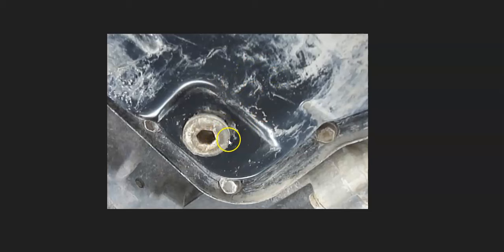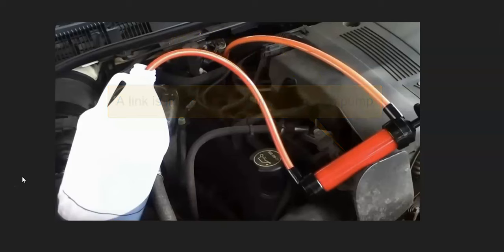Another method to get some of that transmission fluid out is you can get a pump. Basically, you just pull the dipstick out and you put the hose down in there, and then you just pump out however much you want. This is a very common method and probably the best method to do if you have an option. These pumps are pretty low cost and they work pretty well.